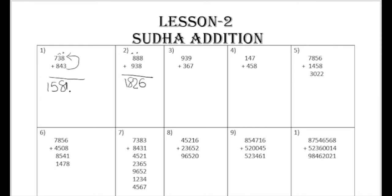These were the two-step examples we usually solve in schools. Now we will go for the three-step example. Here, 2 plus 8 is 10. Since it becomes 10, that is 1 and 0, you hold the 0 and put sudha here for the 1. So this is sudha and this is 0. Then 0 plus 6 is 6, so write 6 down here.